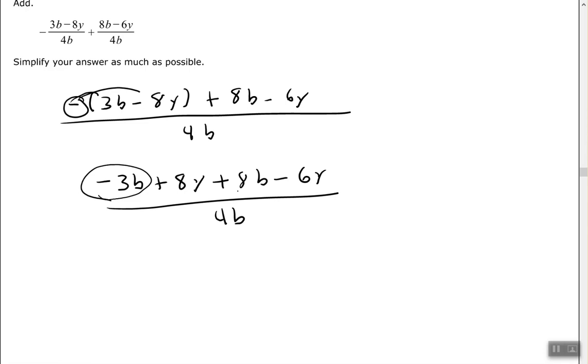Let's combine like terms. I have negative 3b plus 8b, so negative 3 plus 8 is positive 5b. Then I have 8y minus 6y, and 8 minus 6 is positive 2y, all over 4b.